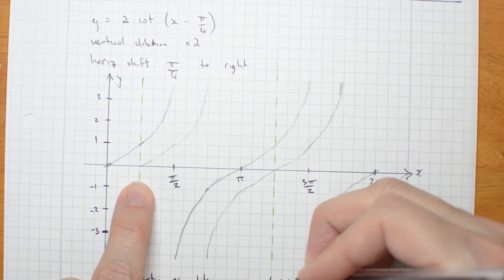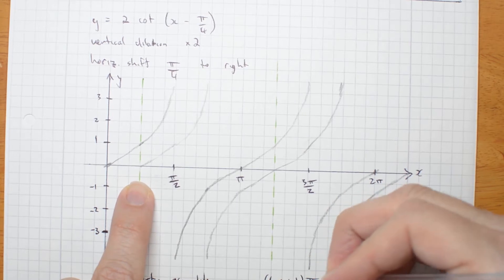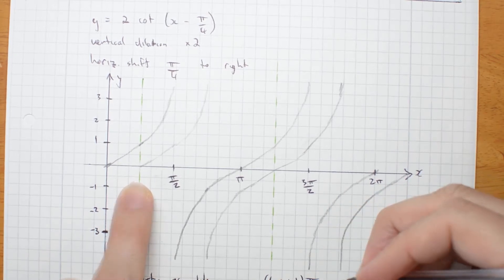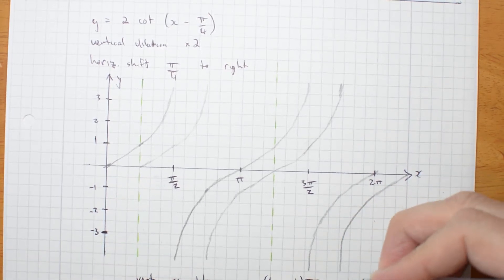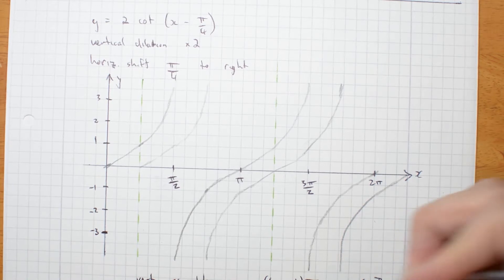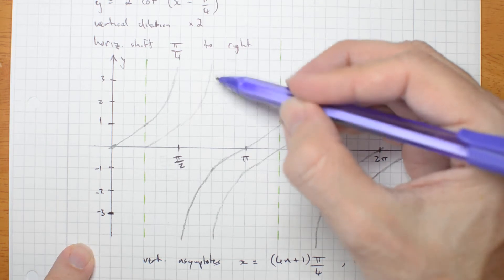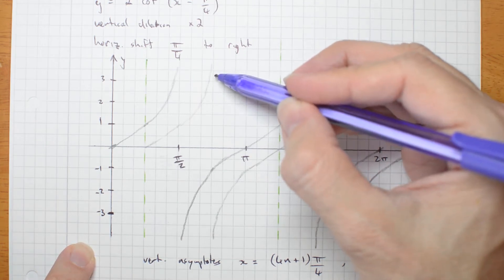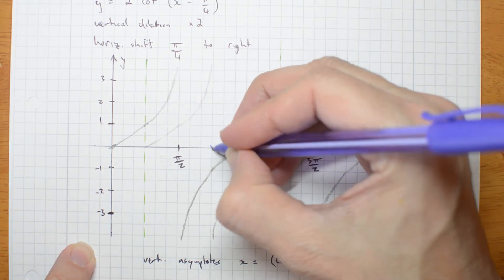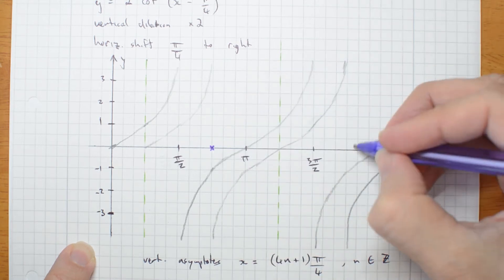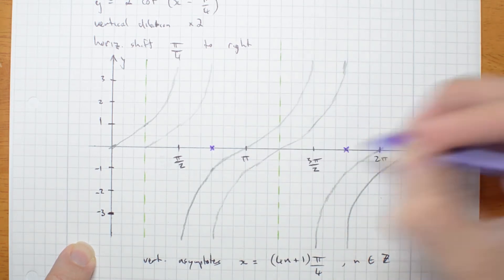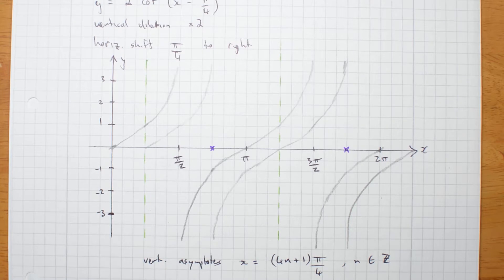That's 4 n plus 1 pi on 4 for integers n. Those are my asymptotes. What else do I know? I know that where the tan graph had asymptotes, my graph is 0. That's here and here. Where tan is undefined, cot is 0.